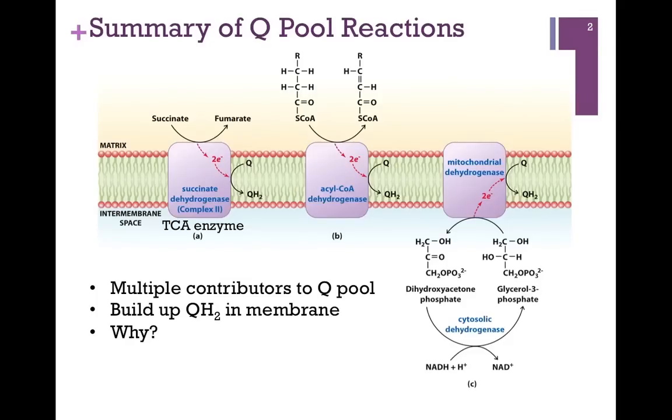In our last video lesson, we learned that Complex 1 accepts electrons from NADH and passes them eventually to ubiquinone, or Q, to form the fully reduced form ubiquinol, QH2. In that process, it pumped 4 protons.